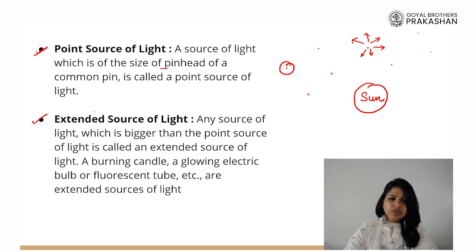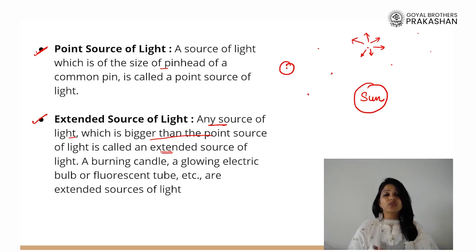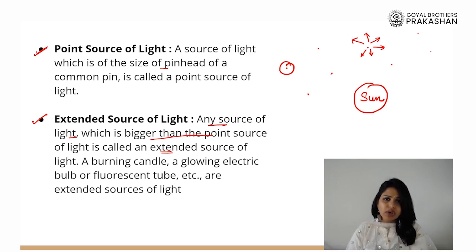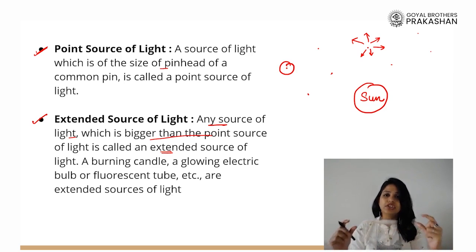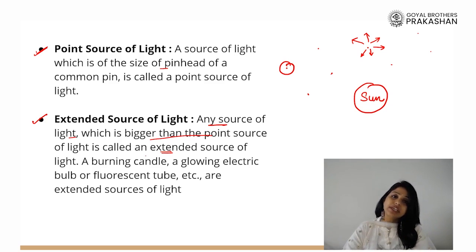What is an extended source of light? An extended source of light is any source of light which is bigger than the point source of light, and it is called an extended source. A point source is one single dot and light is emitted in all directions, but what about an extended source? Have you seen a tube light at your house? It is an elongated light tube which is giving light — it is a luminous body but it is not a point source. So any source of light which is bigger than the point source is called an extended source of light.